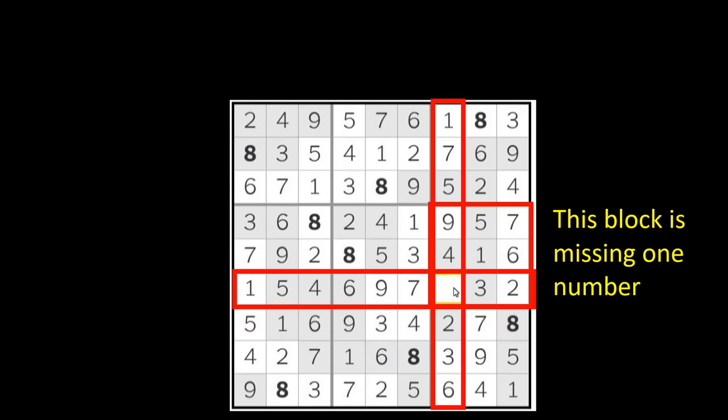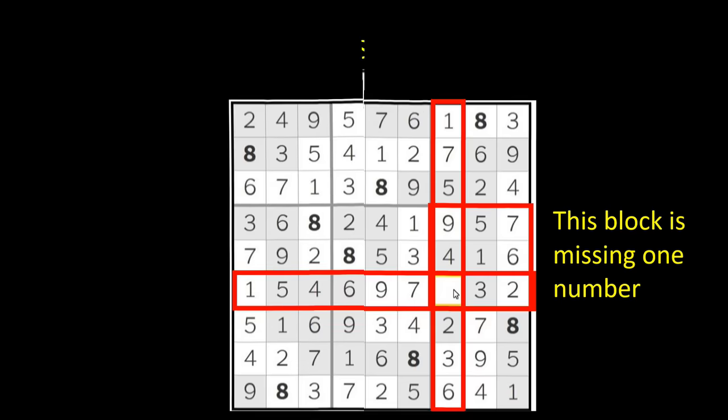If you count, you can figure out which number is missing. One, two, three, four, five, six, seven, okay, eight. Eight is missing. So that is the one and only number that fits in this cell to complete the puzzle.